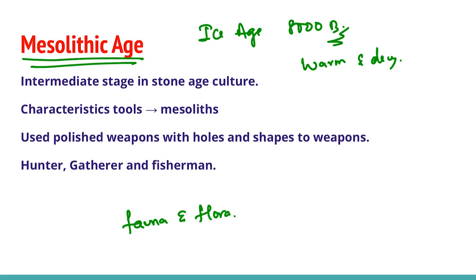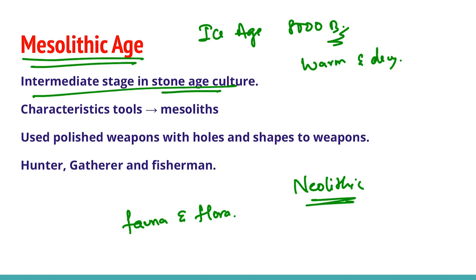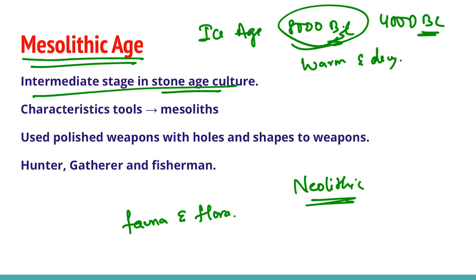From 8,000 BC, an intermediate stage in Stone Age culture began, and that intermediate stage is what we call the Mesolithic age. This Mesolithic age intervened as a transitional phase between the Paleolithic age and the Neolithic age. In India, the Mesolithic age started about 8,000 BC and continued up to 4,000 BC. The tools of this period are generally small when compared to the Paleolithic age, generally varying between half an inch to one inch.